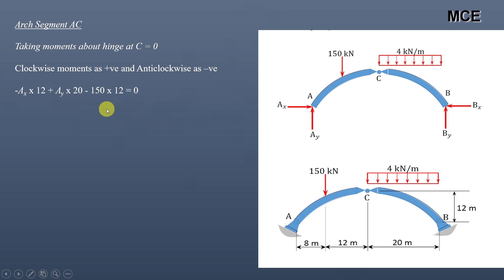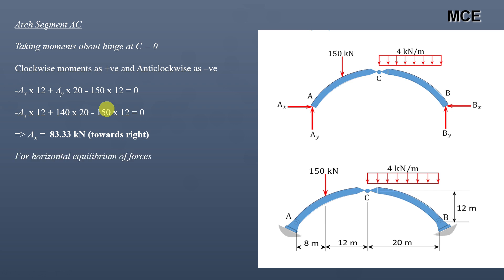The moment of the 150 kN load about C is anti-clockwise with a lever arm of 12 meters. From this equation, substituting Ay = 140, the value of Ax is 83.33 kN — positive, meaning it acts in the assumed direction, i.e., towards the right. Taking horizontal equilibrium, since only Ax and Bx act horizontally: Ax − Bx = 0, so Bx = 83.33 kN, acting towards the left as assumed in the FBD.